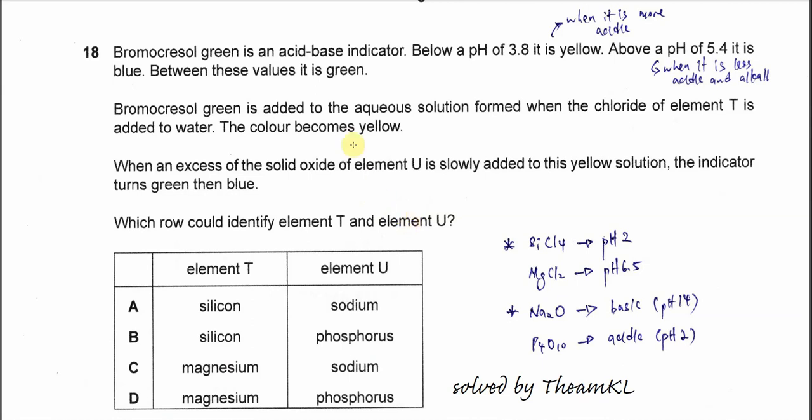Question 18. Bromocresol green is an acid-base indicator. Below a pH of 3.8 it is yellow.